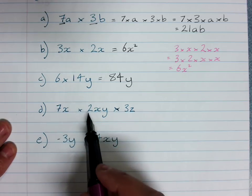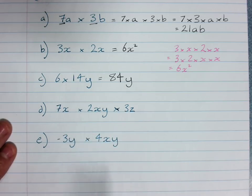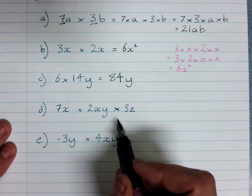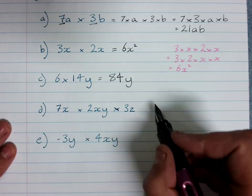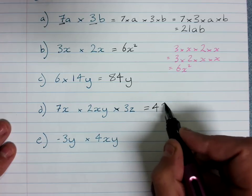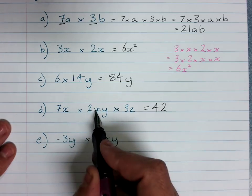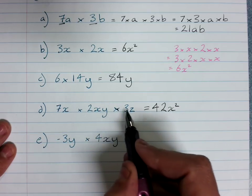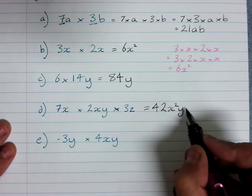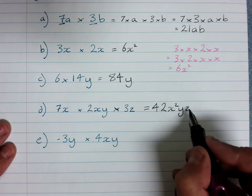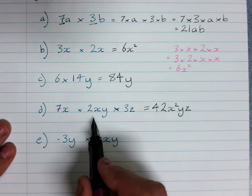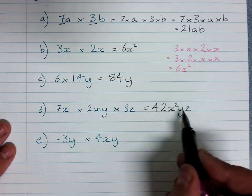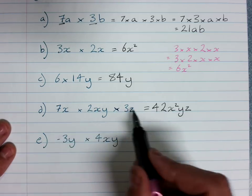So here we multiply the pronumerals. 7 times 2 times 3, now you can absolutely grab your calculator if you want, but that will be 42 x times x is x squared times y times z. So we've got 42x squared yz, and you can see we're keeping track of all those pronumerals and we multiplied those numbers.